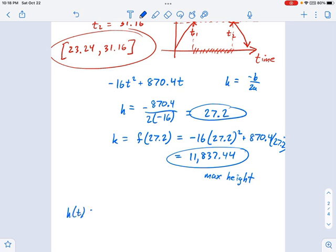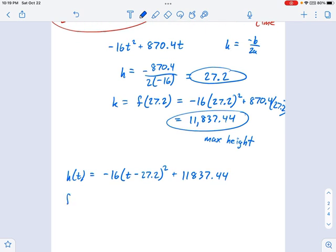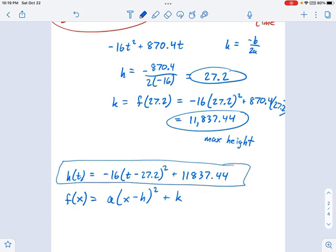I'm going to say H of T, his height, equals negative 16, that's the A right there, times T minus H, remember this is the location of the vertex now, 27.2 squared plus 11,837.44. If you're having trouble seeing where those numbers fit in, just think about the vertex form: A times X minus H squared plus K. That's what I've got right here. And that's how we do all aspects of this parabola application.